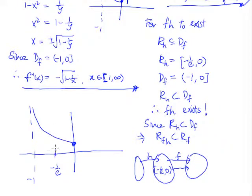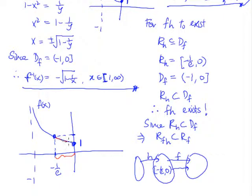If I put in negative 1 over e into f, and go all the way to 0 in f giving a value of 1, I need to know what range I get. The kind of range I'm getting is from the value at negative 1 over e up to 1. The range of f actually goes all the way to infinity, but we don't care about those values because they come from other x values outside the range of h.